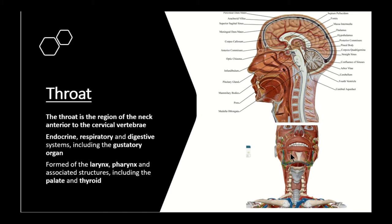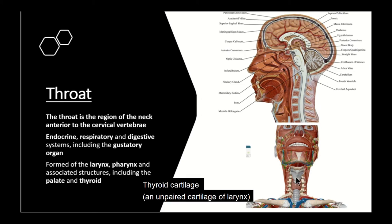Going down from the hyoid bone, we can see the larynx. One of its cartilages is the unpaired thyroid cartilage. At the midline, we can see the fusion of the two laminae of the thyroid cartilage, creating a prominence known as the Adam's apple. Taking a mid-sagittal section allows us to see the thyroid cartilage here; the Adam's apple is the midline prominence formed by the fused laminae.